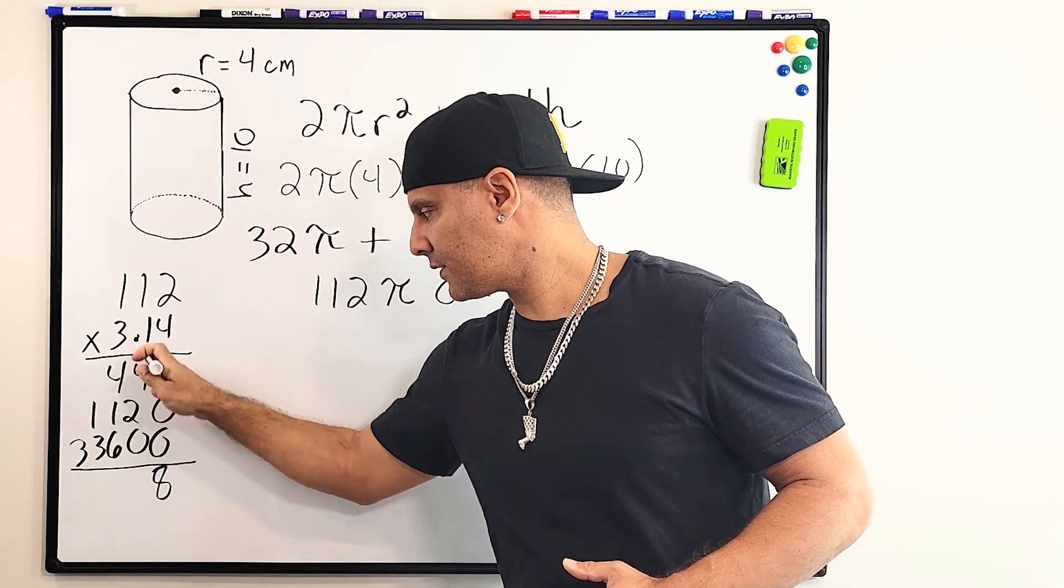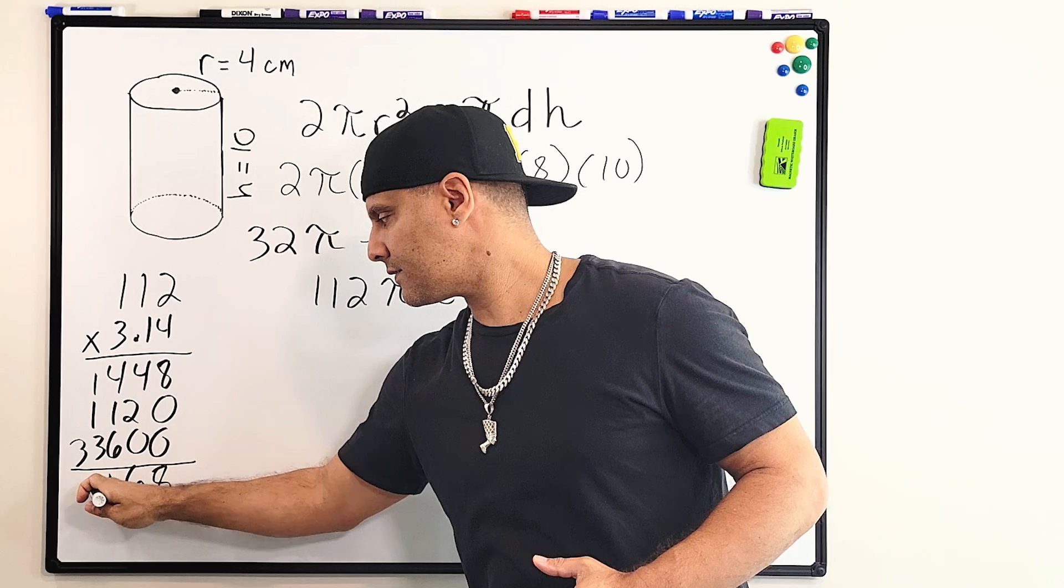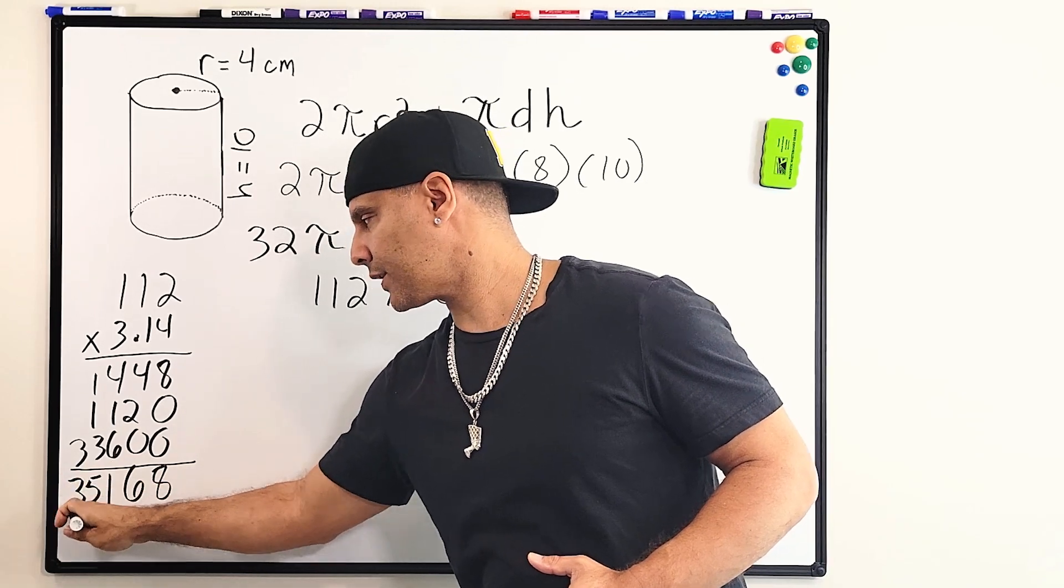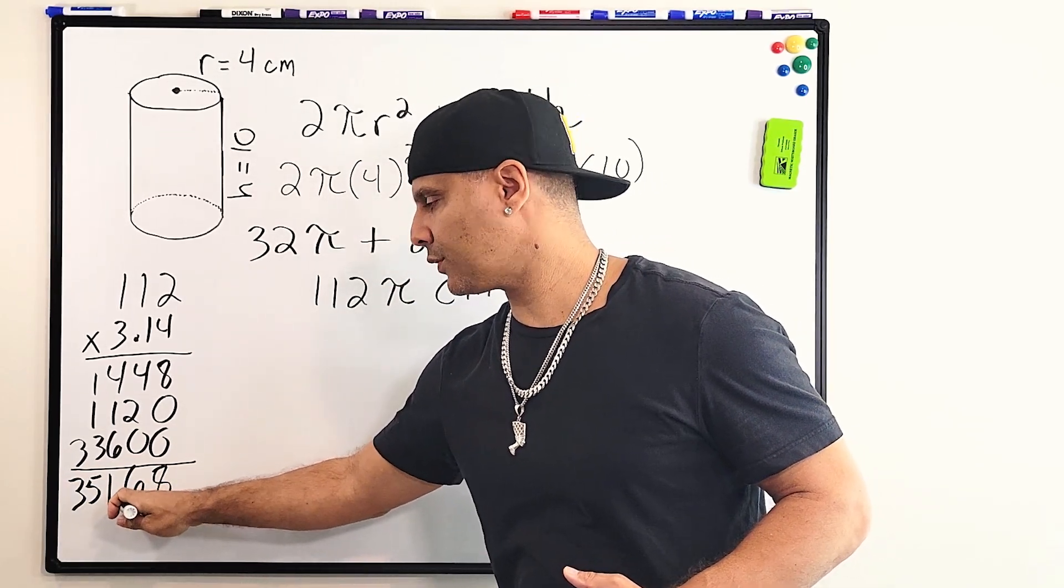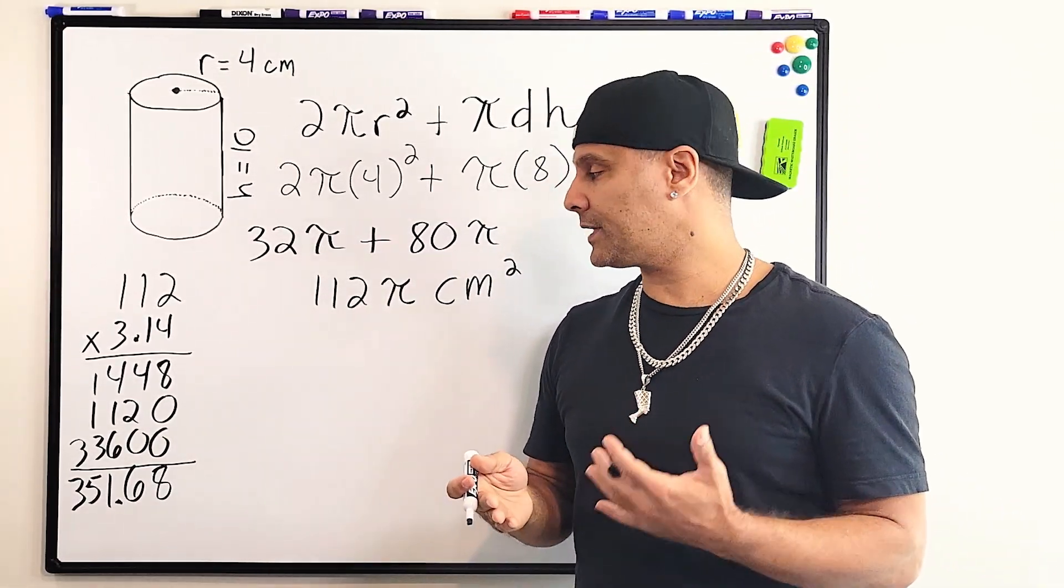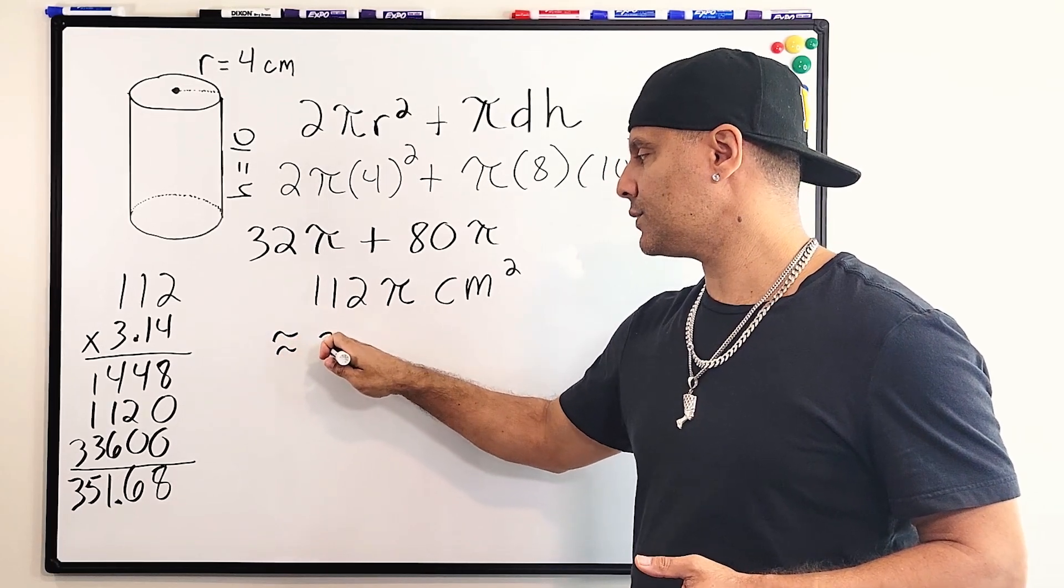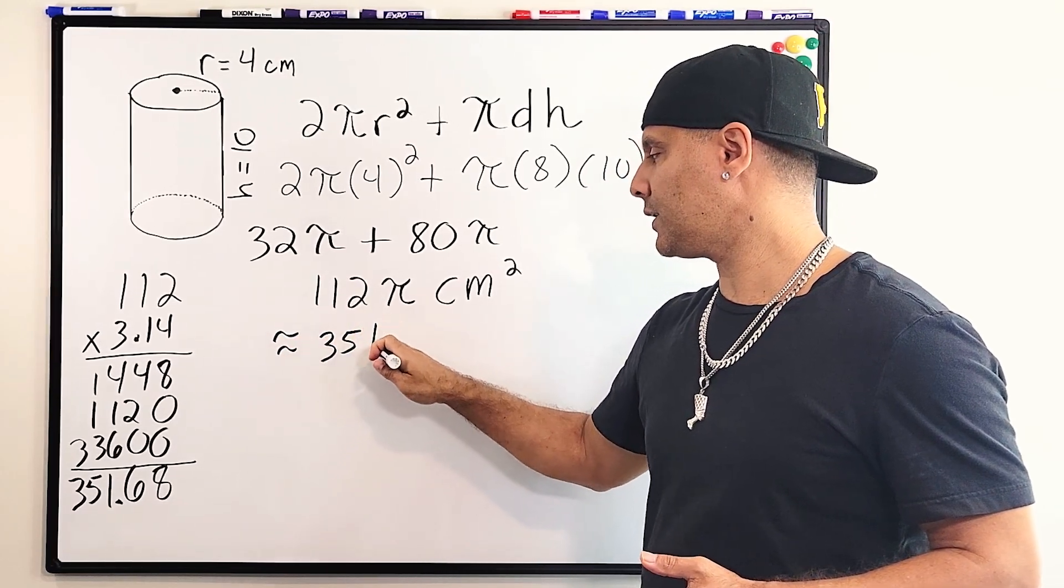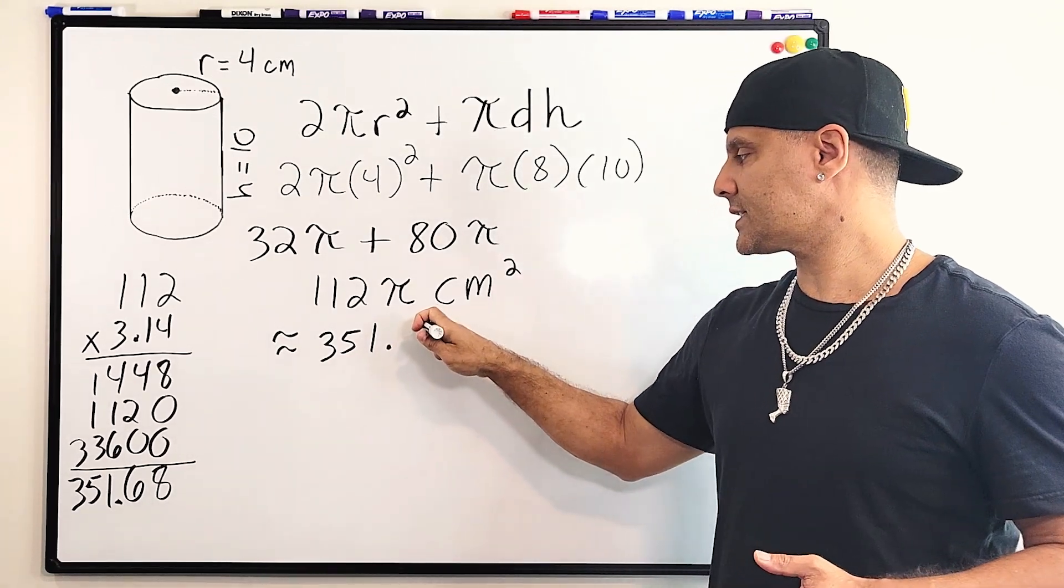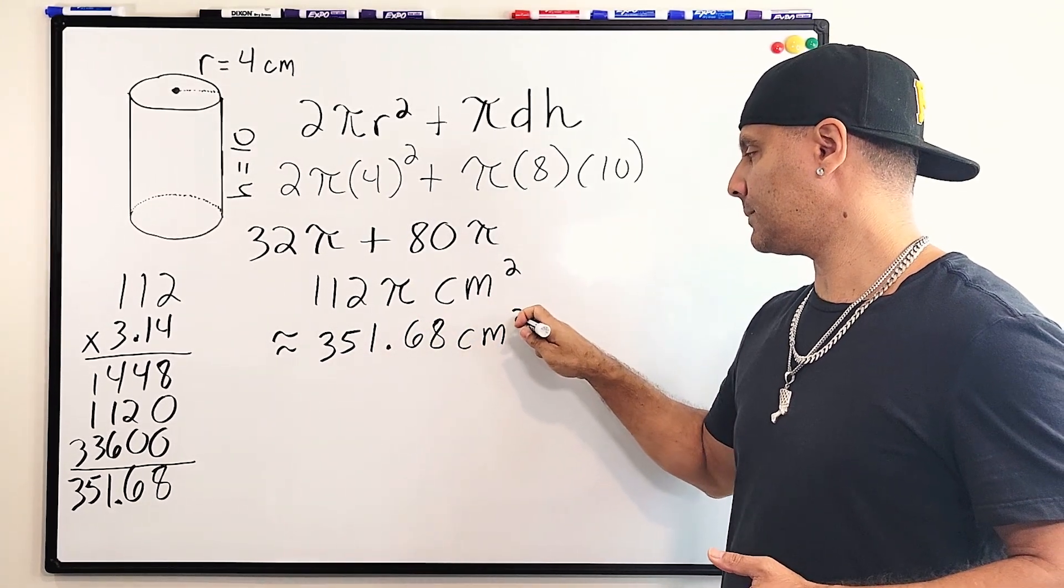Alright, this column is 8, this column is 6, this column is 11, 5, and 3. And, of course, our decimal point goes right here. So if we use 3.14 for π, we end up getting a surface area that is approximately equal to 351 and 68 hundredths square centimeters.